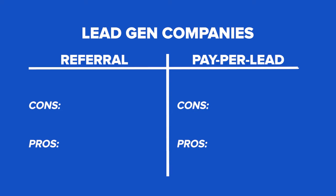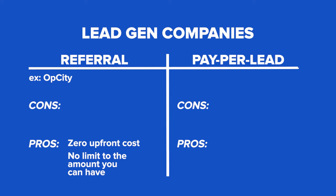When it comes to the referral and commission-based side, you have companies like OpCity through Realtor.com, which can be great if you're starting out earlier in your career. A pro of using this is that there are no upfront costs. They operate as a referral, and there's no limit to the amount of them you can sign up for. Now there are a few cons: lack of predictability because they are referral-based programs, so they often don't have the lead volume that a pay-per-lead generation system would have. Also, these programs often have shared leads — not exclusive leads in most cases.